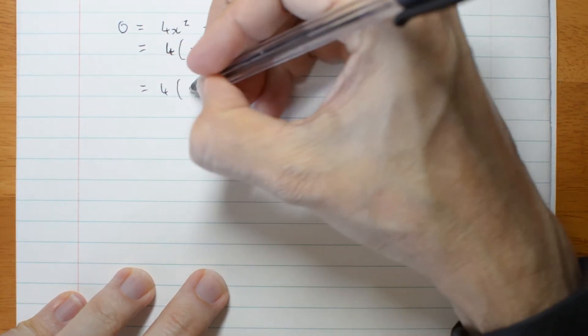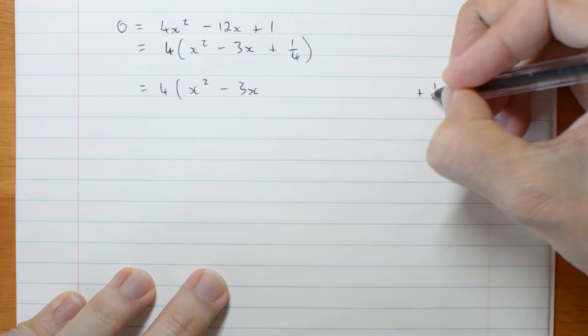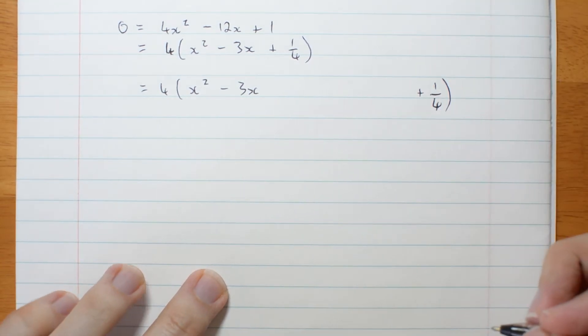Now to complete the square give yourself plenty of room. Minus 3x, put the quarter way over here and leave lots of room.